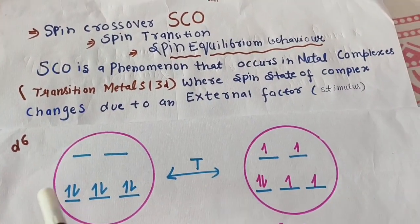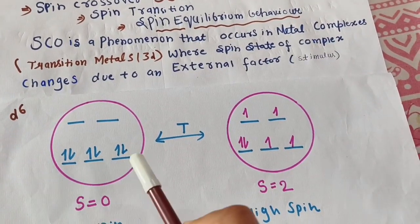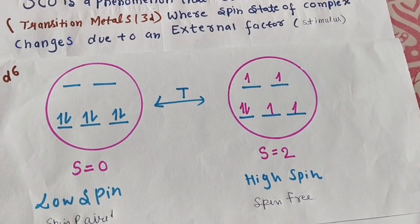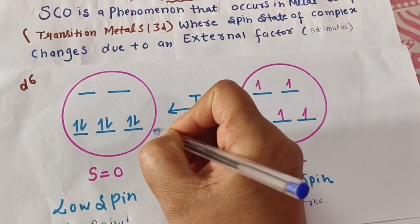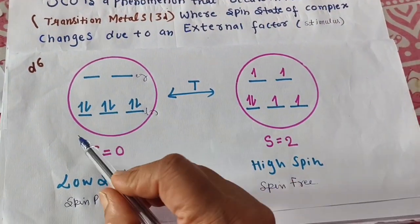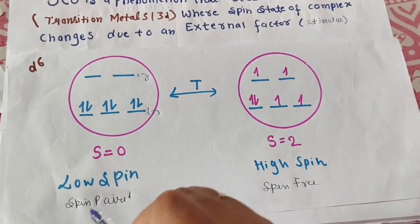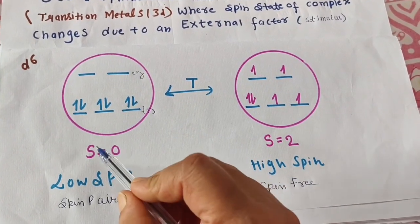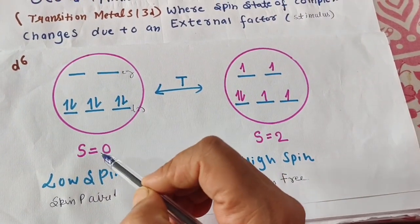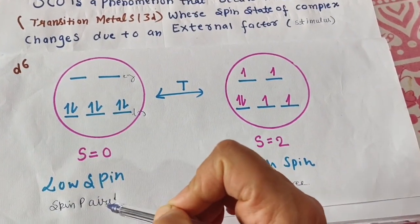Let us take a d6 configuration as an example. We have six electrons. In an octahedral splitting with t2g and eg levels, if all electrons are paired in t2g, this is known as the low spin state or spin-paired condition. The net spin S is zero in this case.